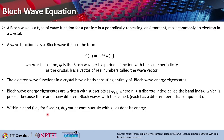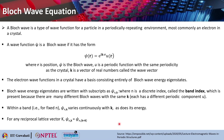Within a band — for a fixed value of n — χ_nk varies continuously with k, as does its energy. If you think of any reciprocal lattice vector K, you can write χ_nk = χ_n(k + K). This means all distinct Bloch waves occur for k values within the first Brillouin zone of the reciprocal lattice, and after that it simply repeats itself.